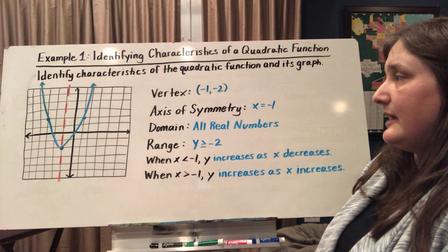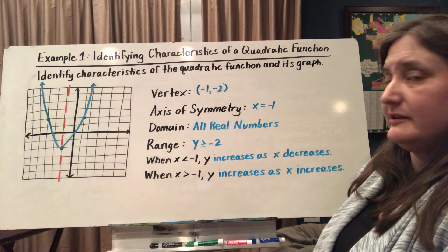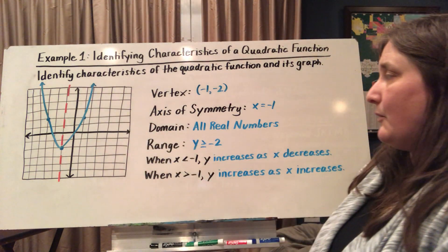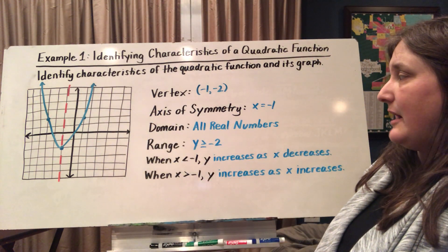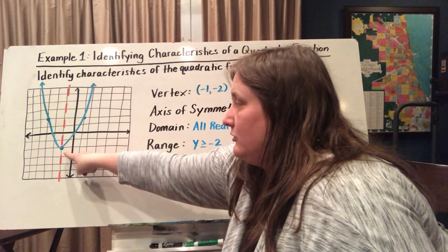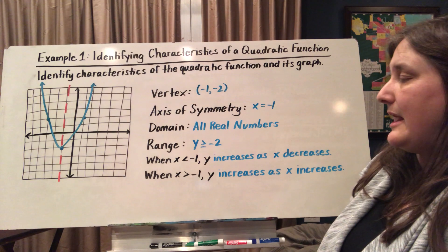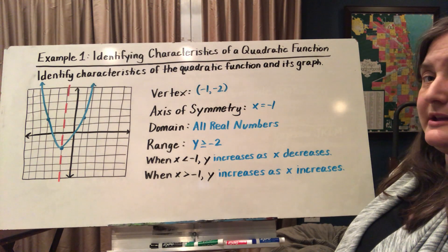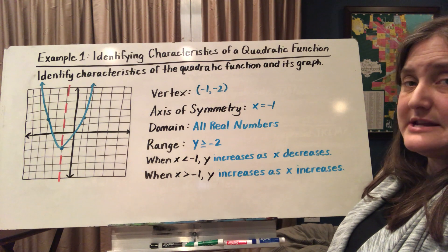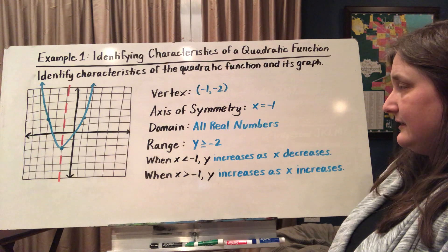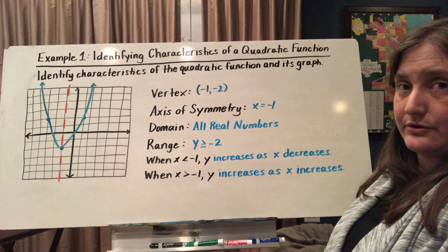The domain in this case is all real numbers, because the u-shape is going to continue to open, so it could be any x value. Whereas for the range, the y values have to be greater than or equal to negative 2. Negative 2 is our lowest point. When x is less than negative 1, the y value is increasing as the x value is decreasing. When x is greater than negative 1, the y value increases as the x value increases.